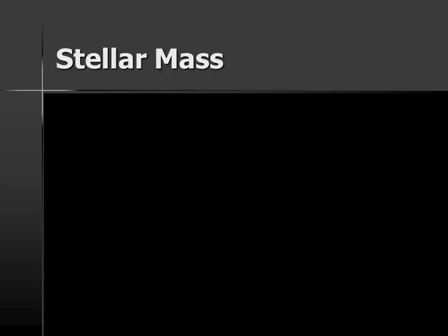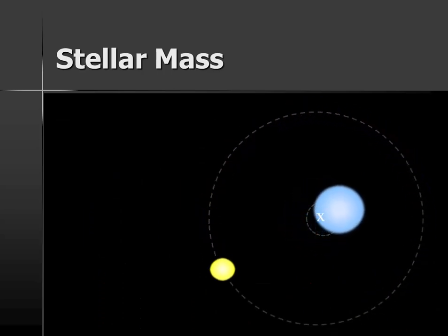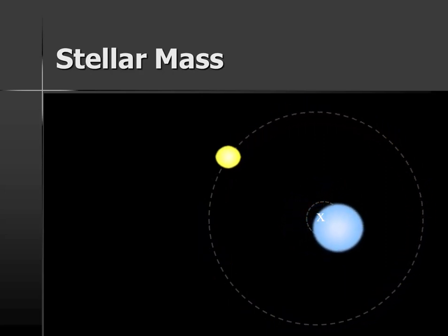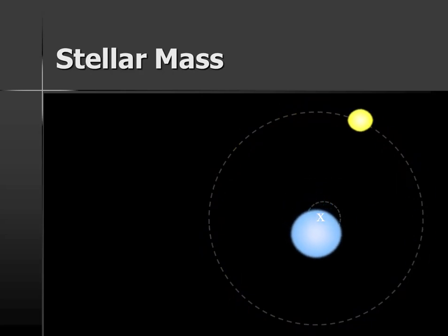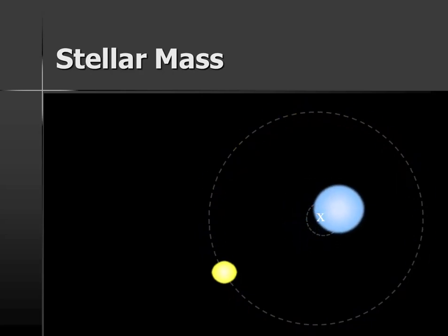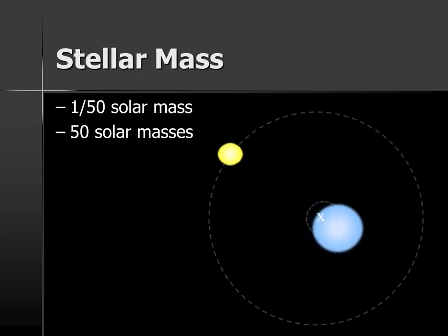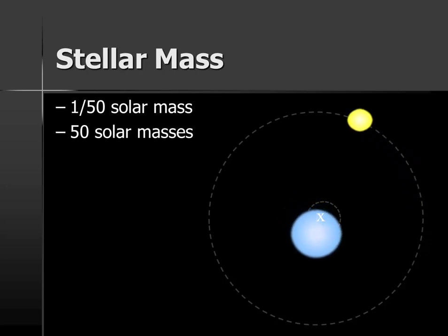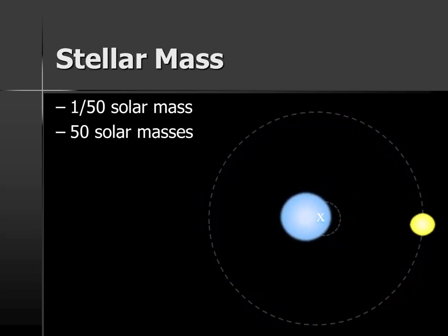We also talk about how heavy stars are. It turns out we can't weigh a star directly by putting it on a balance, but we can watch their motion. The mass of a star is going to be proportional to how much it moves, and so when we see stars orbiting each other, we may be able to calculate their mass. Some stars are as small as 1/50th the mass of our Sun, while other stars may be over 50 times heavier than the Sun.